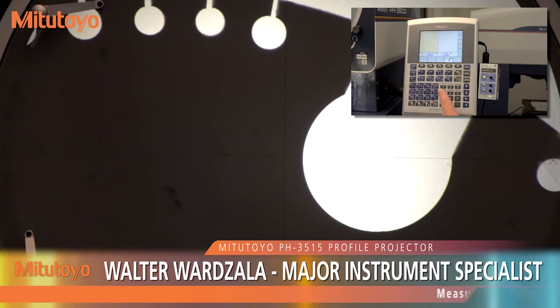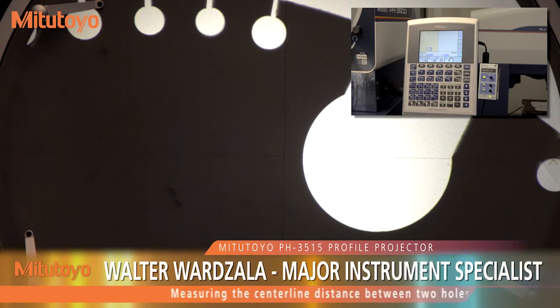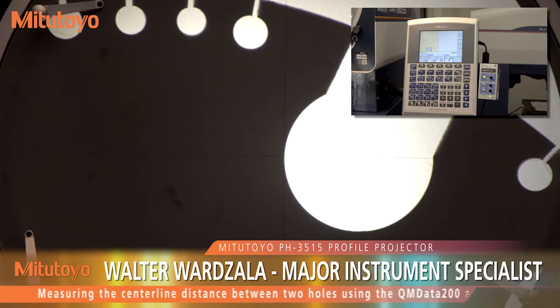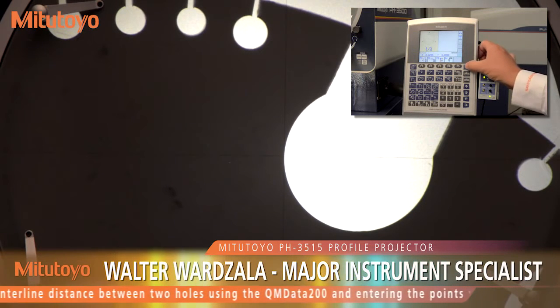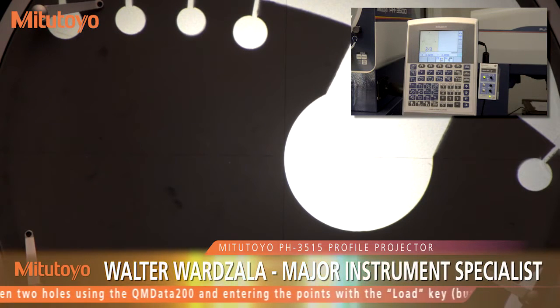To find the center line distance between two holes, first find the center of the holes by selecting circle from the basic feature command keys. A minimum of three points need to be entered to determine a circle.